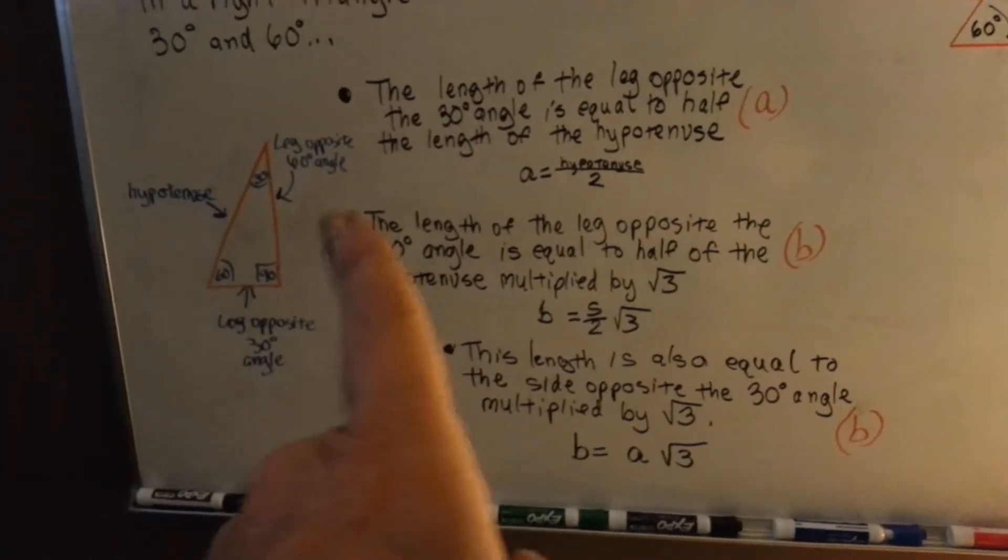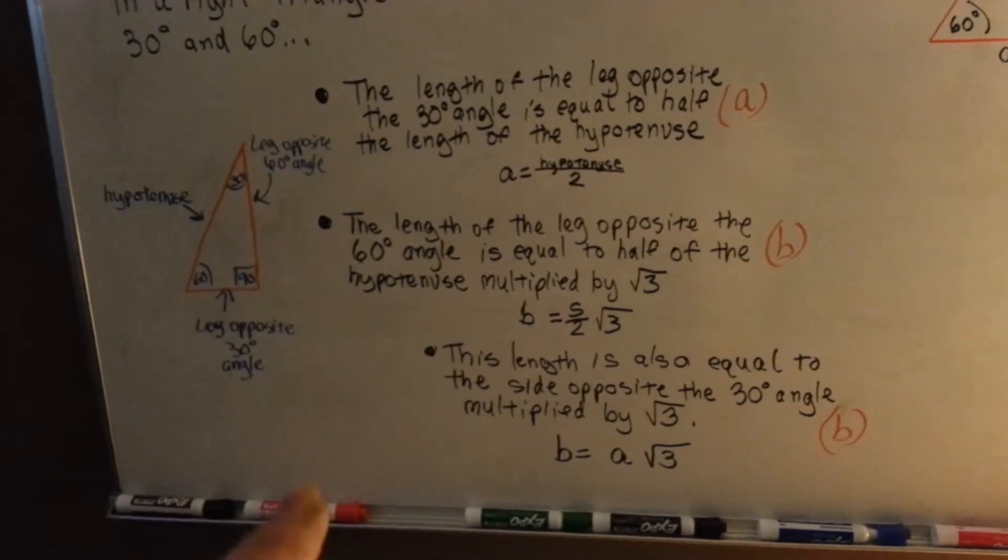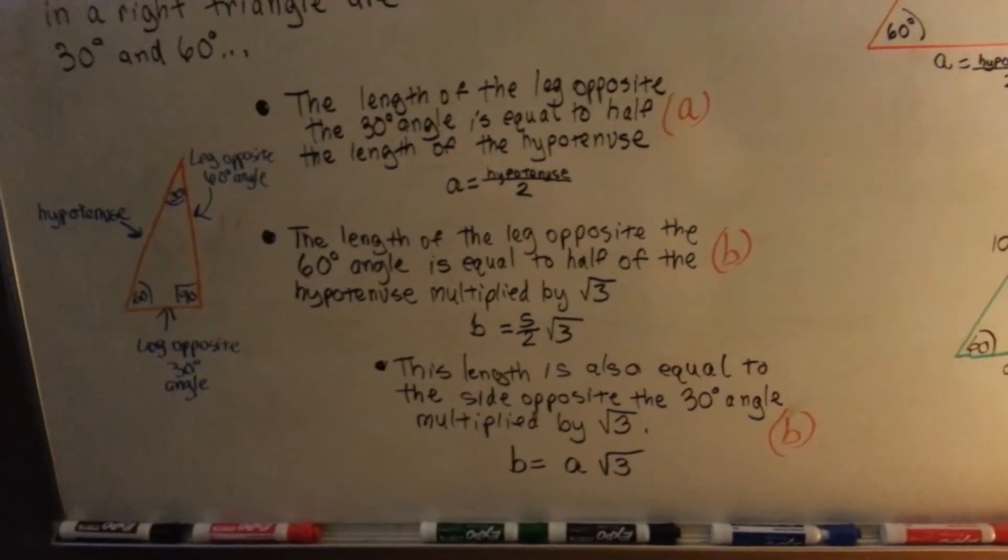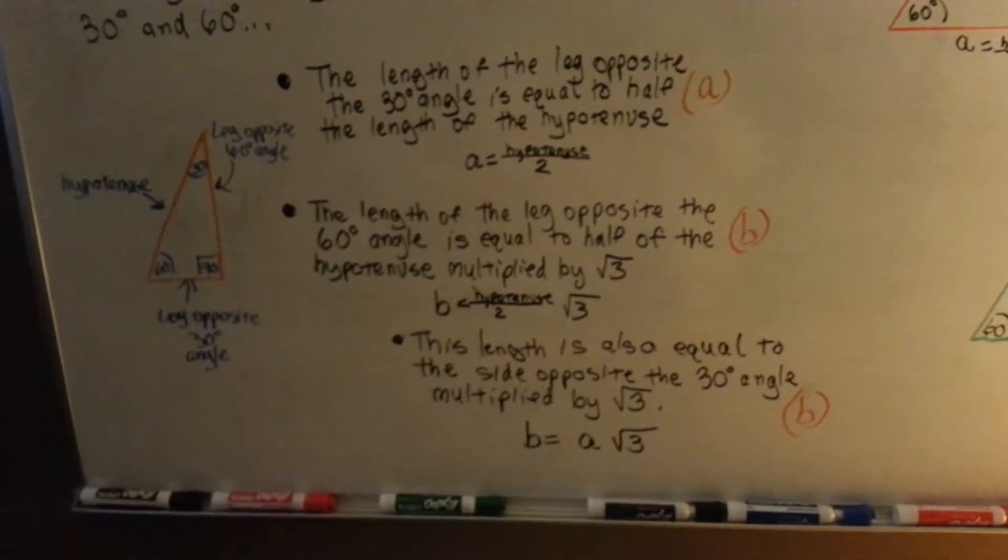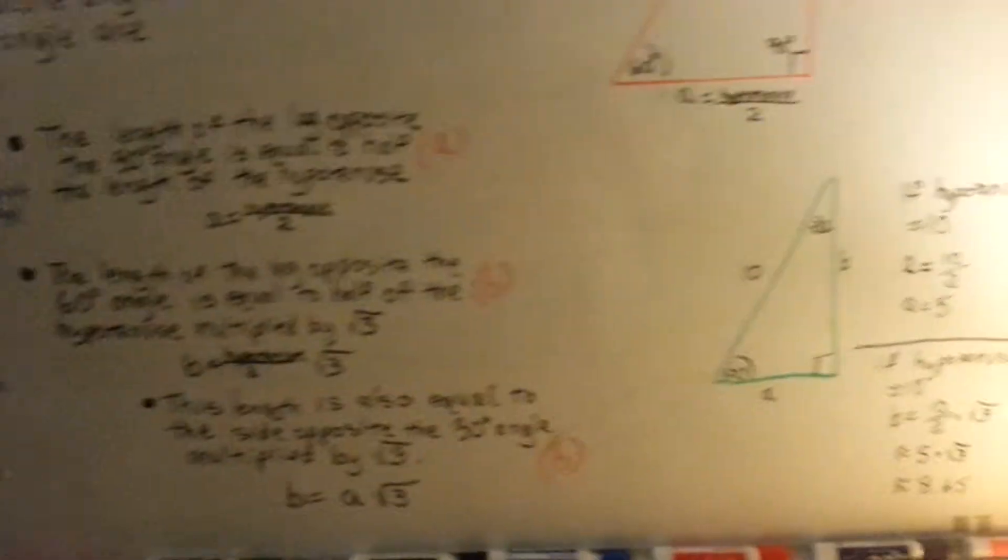And this side is also equal to the side opposite the 30 degree angle if you multiply it by the square root of 3. So let's see, if we wanted to find the length of one of the sides, this is what we could do.